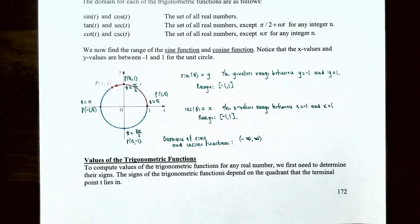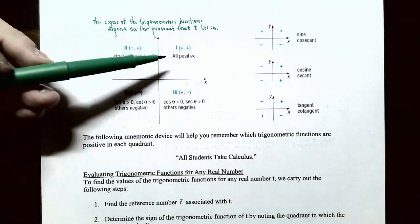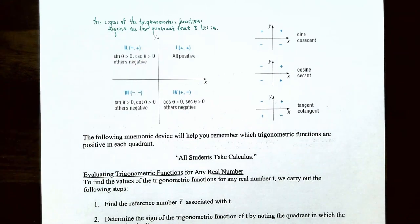Let's talk about values of trigonometric functions. If you want to compute values of the trigonometric functions for any real number, we need to first determine their signs. The signs of the trigonometric functions depend on the quadrant that the value of t lies in. If t lies in quadrant 1, then all trigonometric functions are positive — sine, cosine, tangent, cosecant, secant, and cotangent are all positive in the first quadrant.